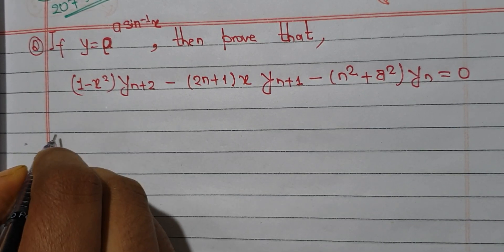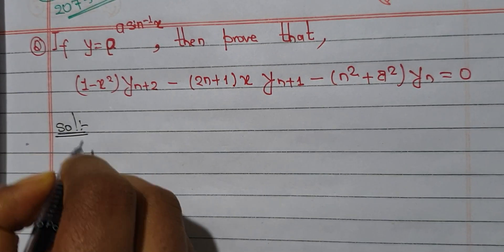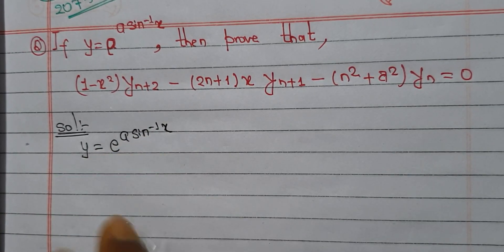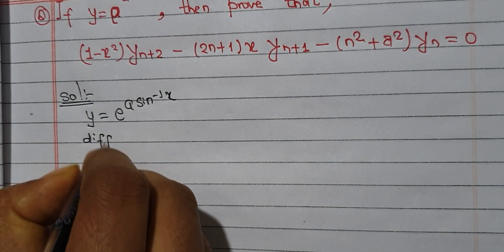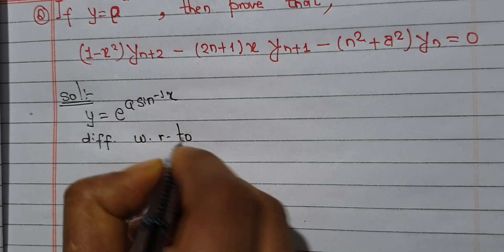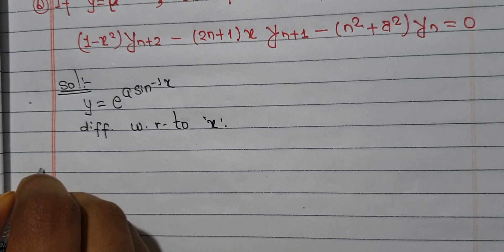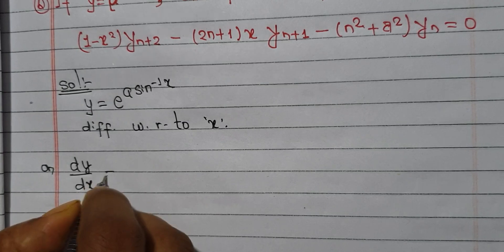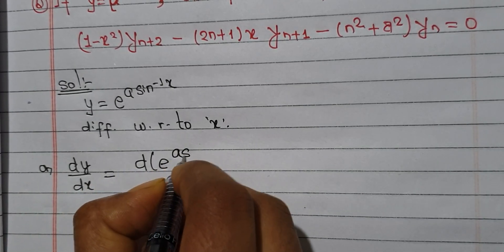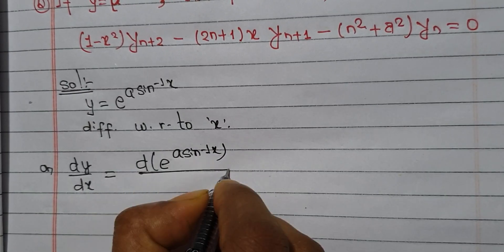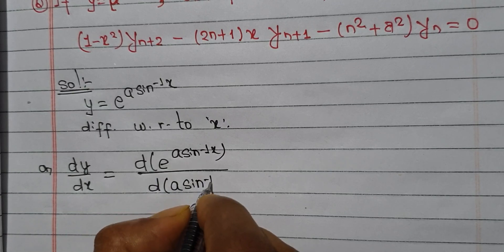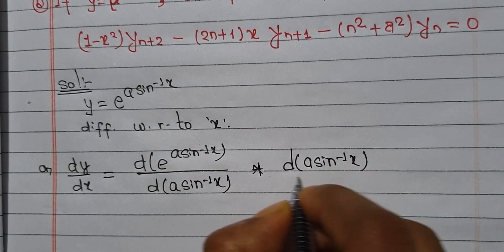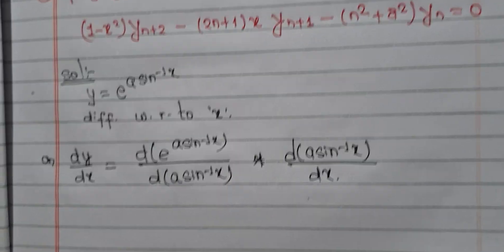The solution: y is equal to e to the power a sin inverse x. Now we are going to differentiate with respect to x. dy/dx equals d of e to the power a sin inverse x by dx, which gives e to the power a sin inverse x into the derivative of a sin inverse x.